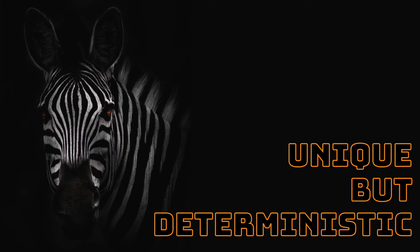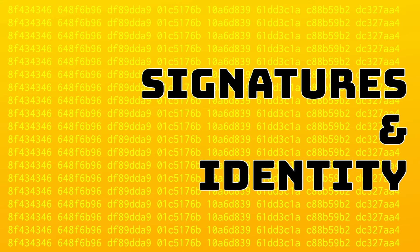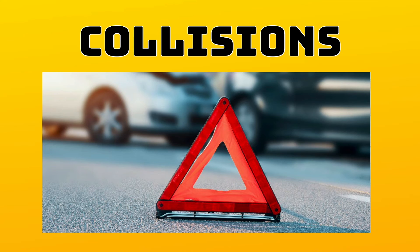Whatever hashing algorithm we use, it has to create the exact same value every time for the same binary value — otherwise it wouldn't work. The hash of your name using SHA-256, for example, has to be the same no matter what machine is doing it. Hashes should be theoretically unique for every binary value they're used with, which means they can act as a form of identity, or a signature, if you will. There are some cases, however, where different binary values yield the exact same hash, and these are called collisions, and are very bad indeed.